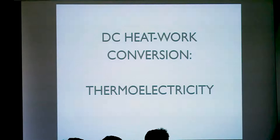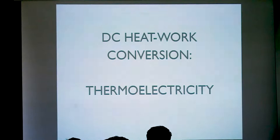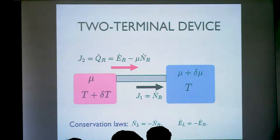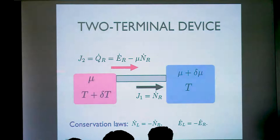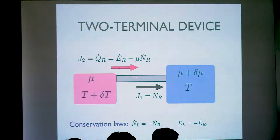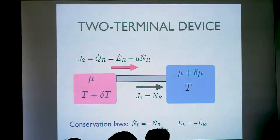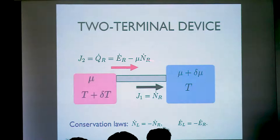Thermoelectricity was very nicely covered today in the tutorial by Heiner Linke, but let me make a short summary. Thermoelectricity deals precisely with the issue of heat-to-work conversion in the DC regime. From the theoretical point of view, it can be formulated in a very simple setup where we have two reservoirs and a conductor in the middle. At the two reservoirs we impose a difference in the chemical potential and also a difference in temperature, and in this way we generate both a charge and a heat current between the reservoirs and through the conductor.